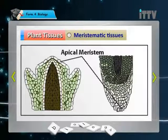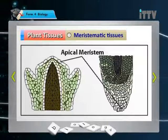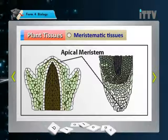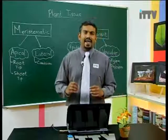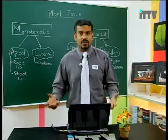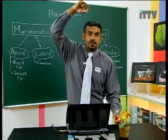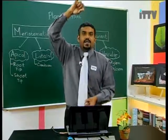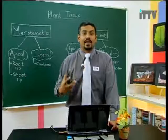The lateral meristems are responsible for secondary growth to increase the diameter of the stem and roots. The diagram on the left is a diagram of the shoot — approximately at the middle of the shoot you can find apical meristems. On the right is the root tip where you also find apical meristems. The shoot tip and root tip are where the plant grows, allowing the plant to grow upwards and downwards. Apical meristems are important for the plant to gain height.